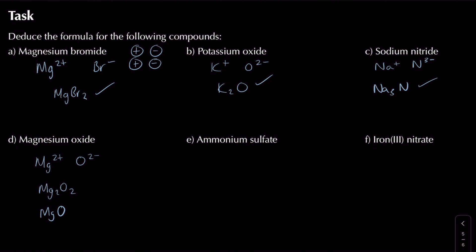For ammonium sulphate: ammonium is NH4+ - an ion we need to remember. Sulphate ends in '-ate', so it's SO4 2 minus, not sulphide. Swap and drop gives (NH4)2SO4 - two lots of ammonium and one sulphate.